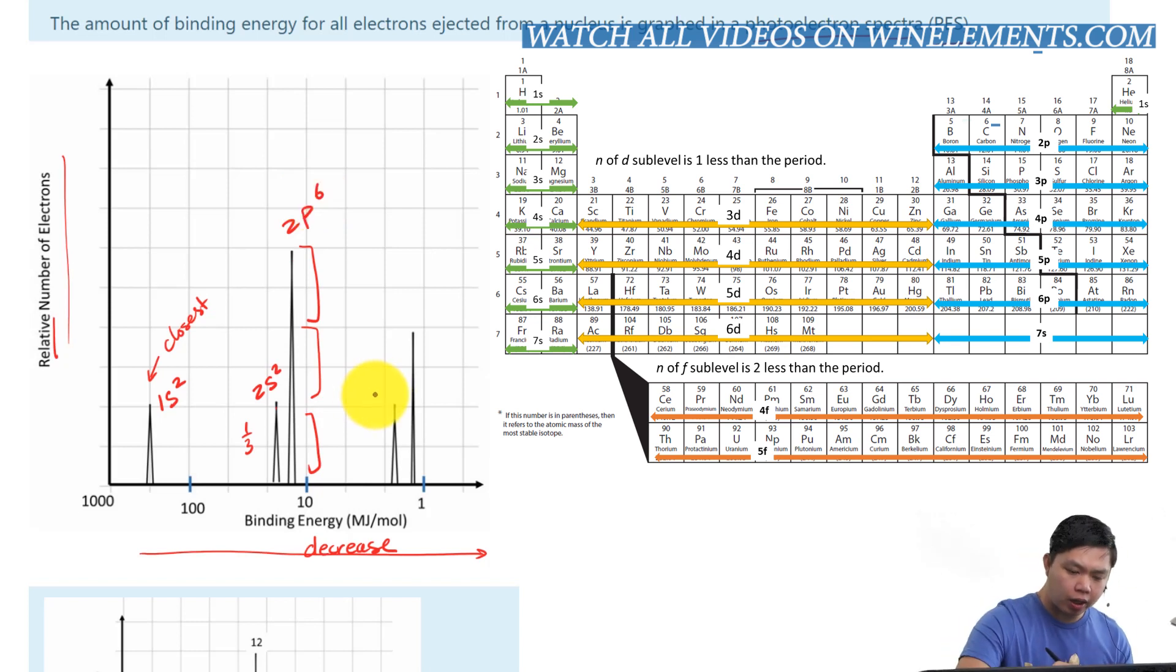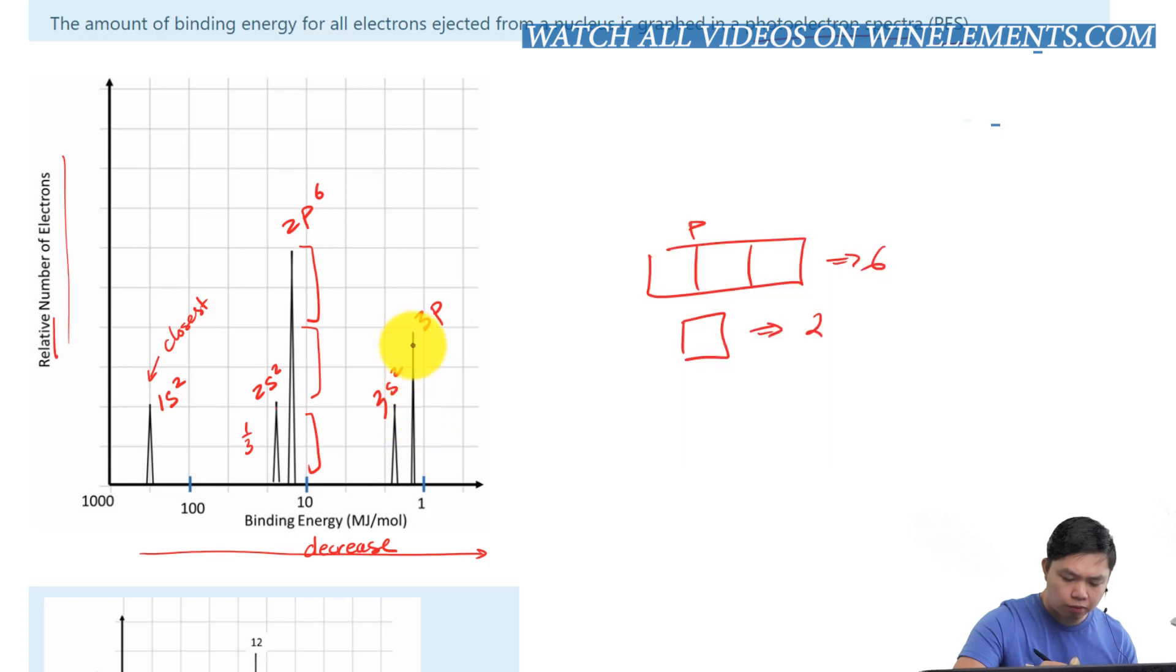this must be 1s2, this must be 2s2, and this must be 2p6. Notice how we start from the very beginning of hydrogen, and we keep going, and this must be 3s2, and this must be 3p1, 2, 3, 4. So, therefore, this must be 4 right there. You see how that works?